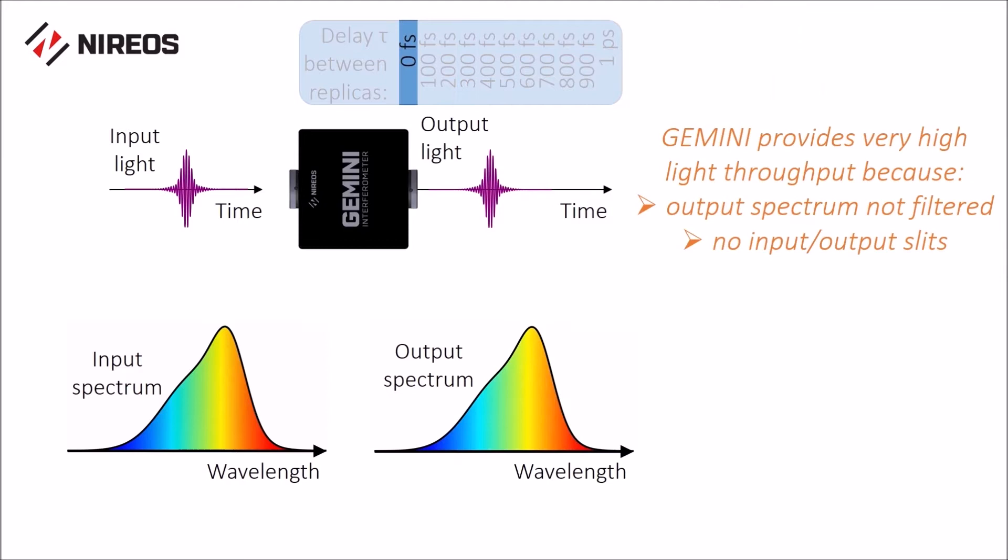Gemini provides very high light throughput because the output spectrum is non-filtered and there are no input or output slits, as it would happen with a monochromator.